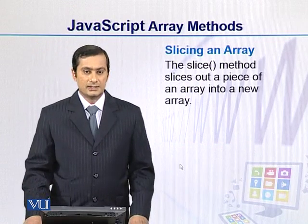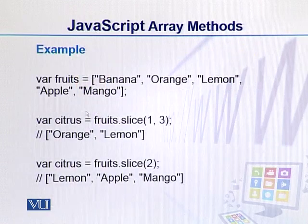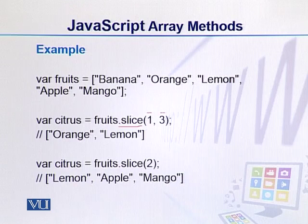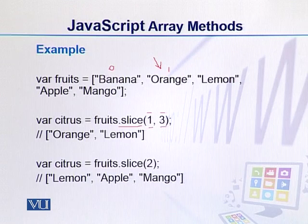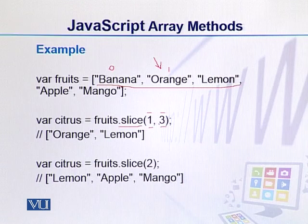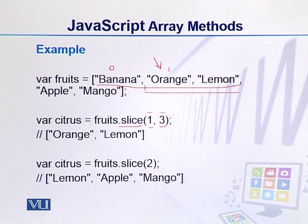We can also easily slice an array using the built-in slice function. In our example, we have an array of fruits and we apply the slice function with two arguments. The first argument tells us which index to start from. For example, starting at index 1, it will begin from that position. The second argument tells us how many total values to take from the start index. Here we give three as the second argument, so we take three values starting from index 1, returning orange and lemon.